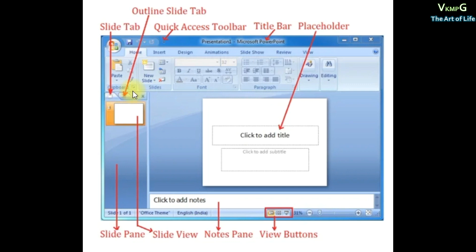The Outline Tab allows you to add and edit text of your PowerPoint slides in outline format. The Slide Pane shows an enlarged visible view of the current slide, and you can change and select slides from there.